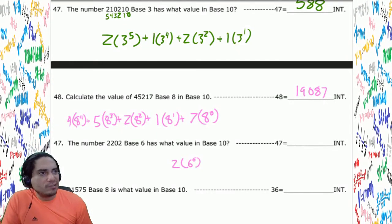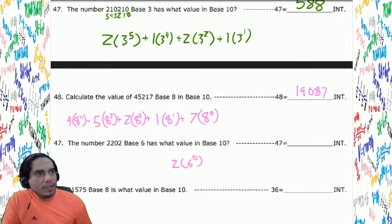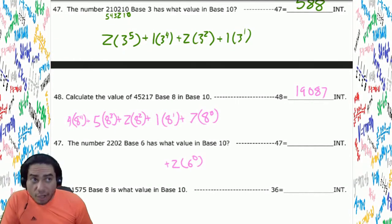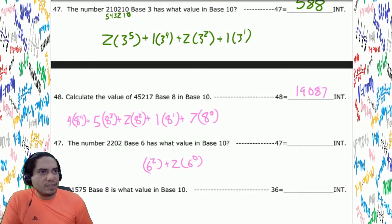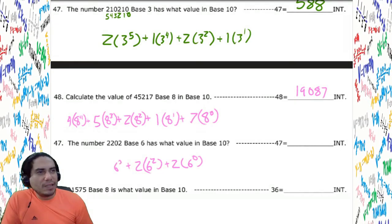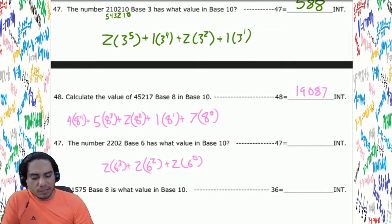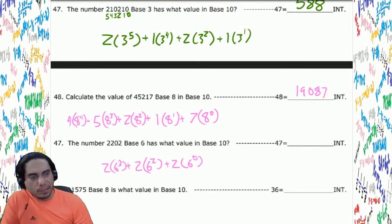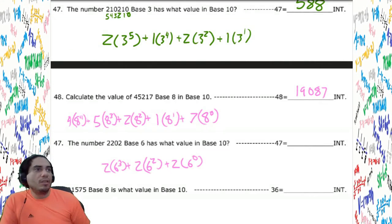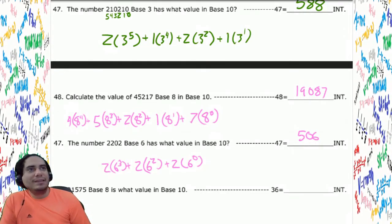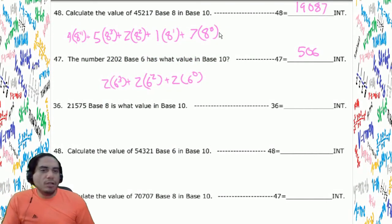Another problem: a base 6 number with digits in specific places. We have 2 times 6 to the zero, nothing in the 6 to the first, 2 times 6 to the second, and 2 times 6 to the third. On the calculator: 6, enter, 3, y-to-the-x, times 2; 6, enter, 2, y-to-the-x, times 2, plus; 6 to the zero times 2, plus. Hit yellow show — the answer is 506.